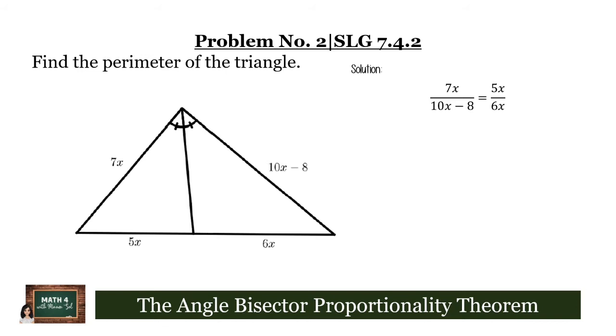Solving this algebraically, we get 7x times 6x is 42x squared, and 10x minus 8 times 5x is equal to 50x squared minus 40x. Simplifying this further, we will get 8x squared minus 40x equals 0. We can factor out 8x, and we will get x minus 5 as the other factor.